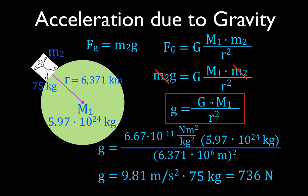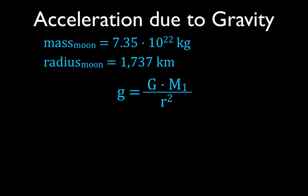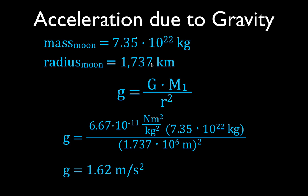Now let's calculate the acceleration due to gravity on the Moon using the same equation: G equals the gravitational constant times the mass of the Moon, divided by the square of the Moon's radius — the distance from the center of mass of the Moon. G is still 6.67 times 10 to the minus 11, M1 is the Moon's mass in kilograms, and R is the Moon's radius in meters. We get that the acceleration due to gravity at the surface of the Moon is 1.62 meters per second squared, which is about one-sixth of what it is on Earth.